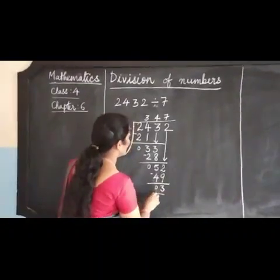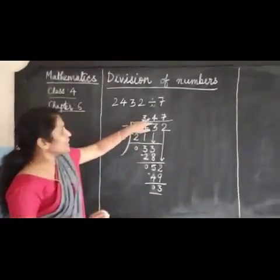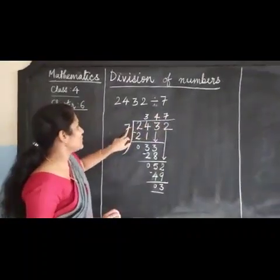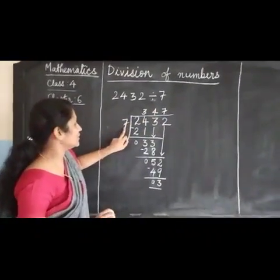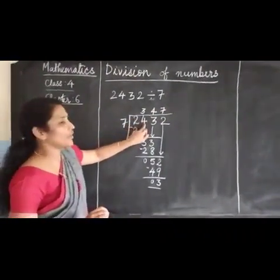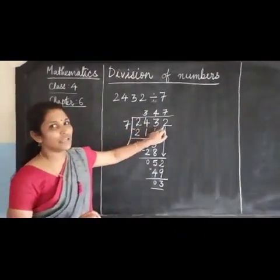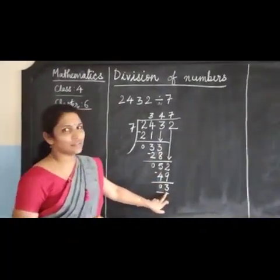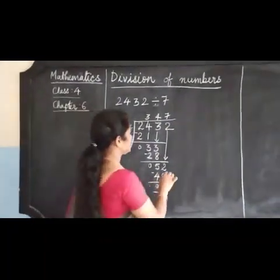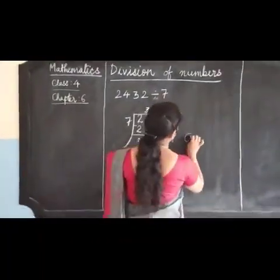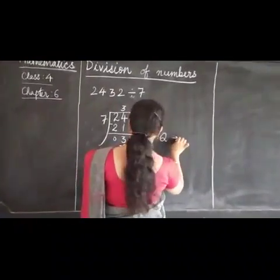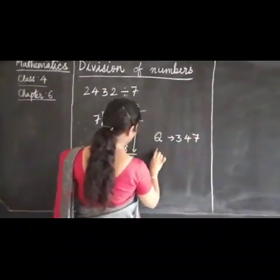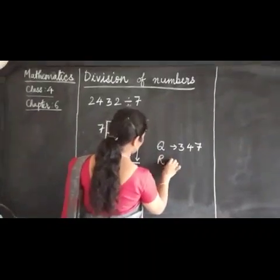We have got that there are 347 sevens in 2432 and the remainder is 3. So the quotient is 347 and the remainder is 3.